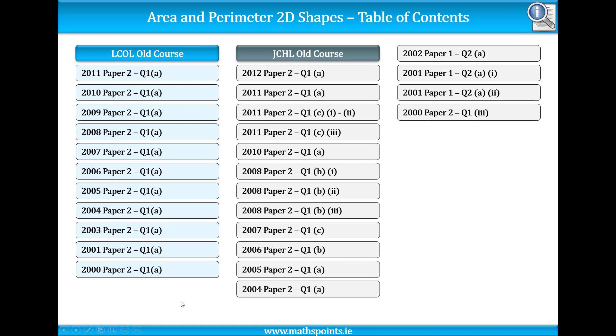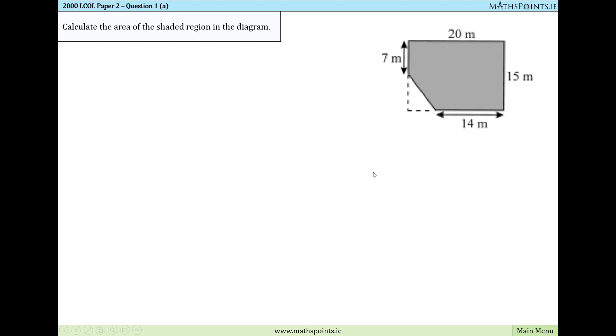Let's take a look at this area question from the 2000 Leaving Certificate Ordinary Level Paper. We're asked to calculate the area of the shaded region of the diagram. If we look at it, we can see that's going to be the area of a rectangle minus the area of this triangle in the bottom left hand corner.